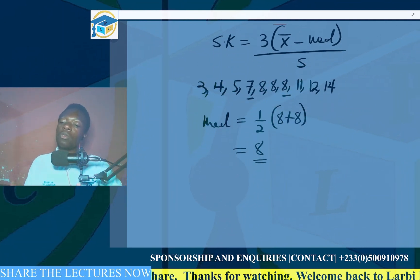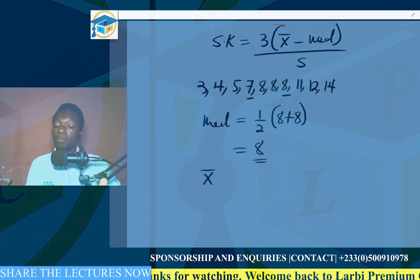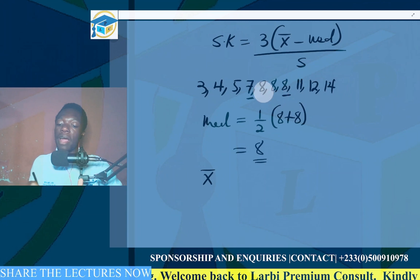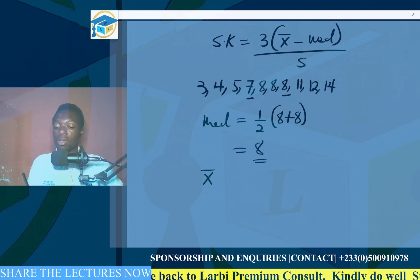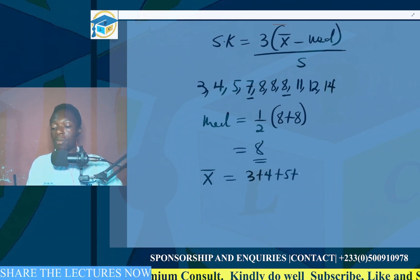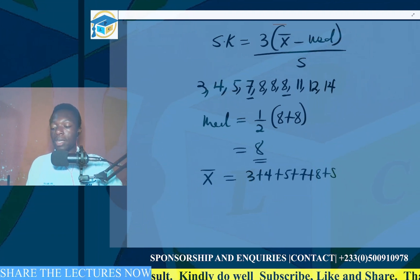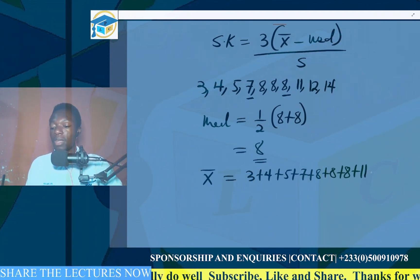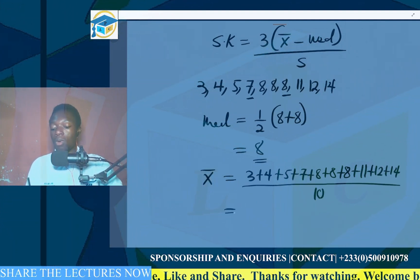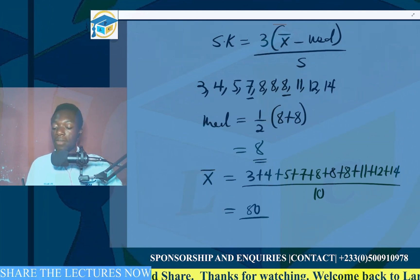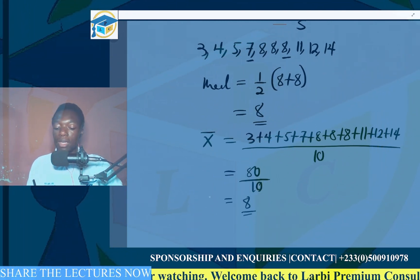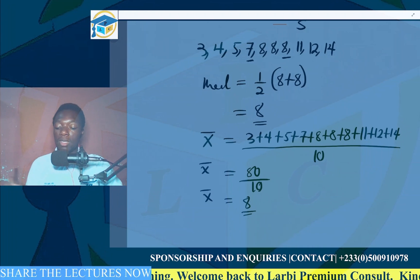Next, we find the mean. We sum up all the values and divide by the count of 10. So: 3 + 4 + 5 + 7 + 8 + 8 + 8 + 11 + 12 + 14 = 80, divided by 10. Our mean equals 8.